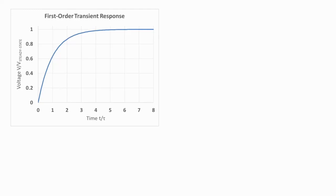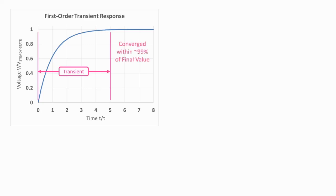Let's take a closer look at the response. This plot shows voltage versus time for a first-order circuit, with voltage on the vertical axis and time on the horizontal axis. A sudden change happens in the circuit at time zero. The voltage starts at an initial value, then exponentially changes, and then levels off at some final value. We define the transient portion of the response between the time of the sudden change and the time when the voltage reaches a final value. It's a bit subjective, but we often assume that once the voltage has converged to 99% of the final value, it has reached the final value.